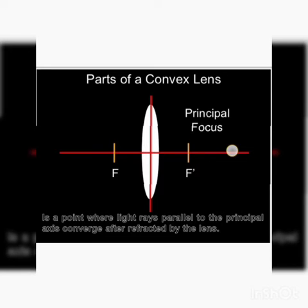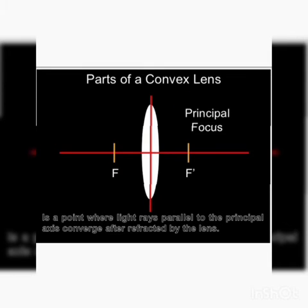Inward bend होने के बाद principal axis — यह red color की line — पे जब वो light आके join करती है, उस जगह को हम principal focus कहते हैं। यह वो point होता है जो principal axis पे बनता है और यह focal point होता है जहाँ पर image की formation होती है। अगर light right side से आ रही है और bend होके principal axis को join करे तो वो principal focus होगा; left side से आके join हो तो वो भी principal focus point होगा।